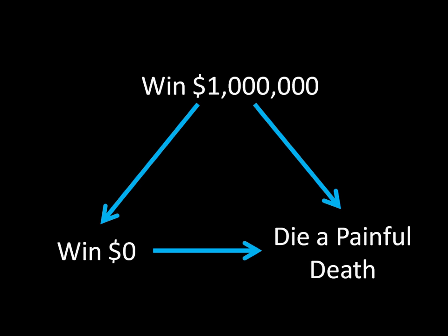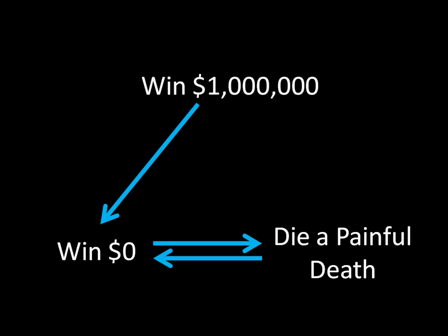Transitivity also works with indifference. Imagine the individual prefers winning a million dollars to winning zero dollars, and finds winning zero dollars to be equally as good as dying a painful death — he is indifferent between those two outcomes. Since winning zero dollars and dying a painful death are interchangeable in this person's eyes, it should be the case that the individual prefers winning a million dollars to dying a painful death.